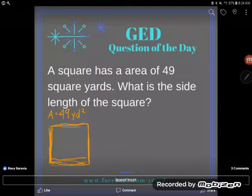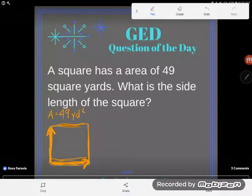Area is found by multiplying the same number by itself. So some number times itself would have to equal 49. We're kind of working backwards here.